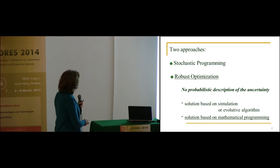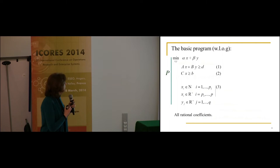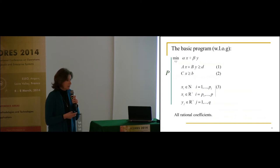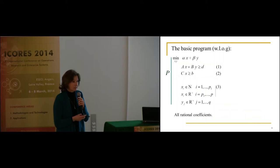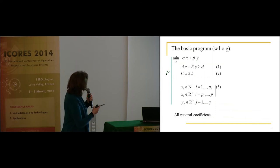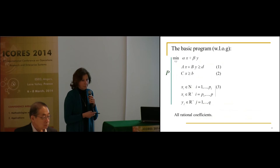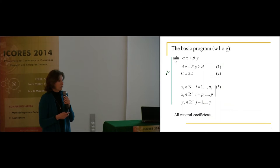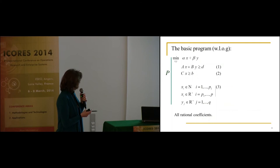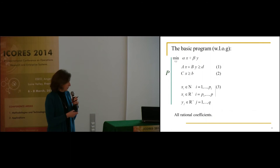I will consider a very basic linear problem where we have two sets of variables: variables x and variables y. We have also two sets of constraints. The constraints 2 are only devoted to variables x, while constraints 1 link together x and y. In addition, x can be either integral or real, but I will suppose that the variables y are real variables, which makes a big difference for the solution of the problem.